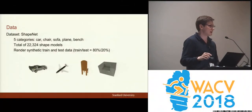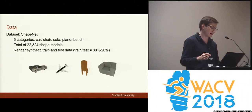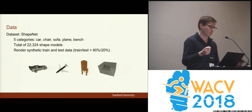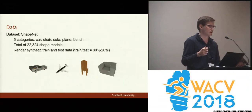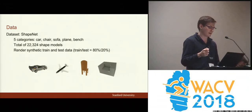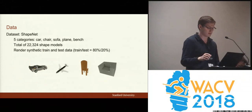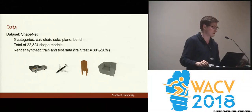For training, we rely on synthetic data. We use the ShapeNet dataset with five different categories, amounting to more than 22,000 total objects, and we render images of these objects from different angles for training and testing.